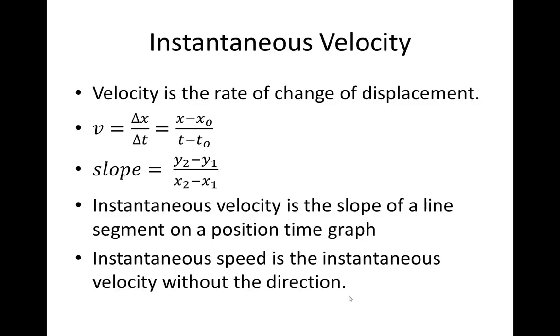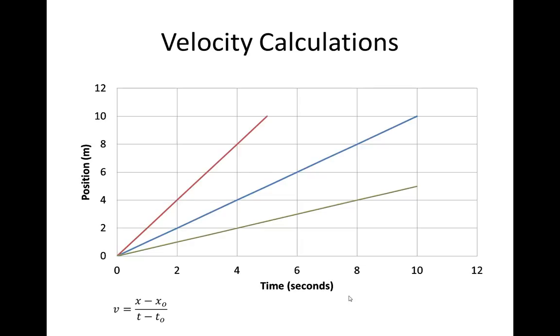Instantaneous speed is simply velocity without direction. So the velocity for the first one is 1 meter per second. For the second, 2 meters per second—he went the same displacement in half the time. And then the last one is 0.5 meters per second. He went half the displacement in the 10 seconds. And this makes complete sense. So slope really does give you an indication of how fast the object is moving.